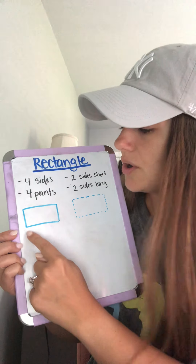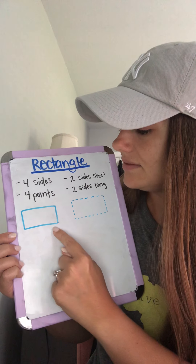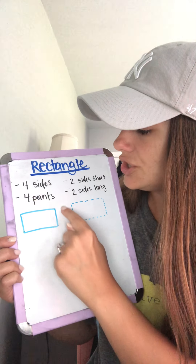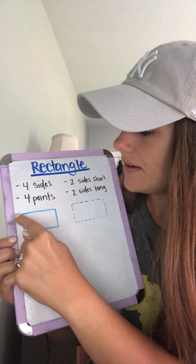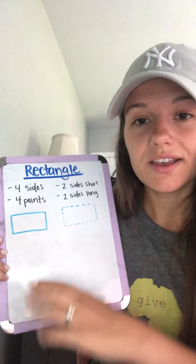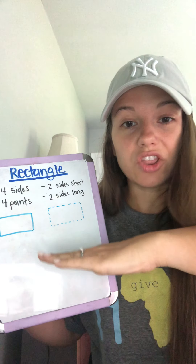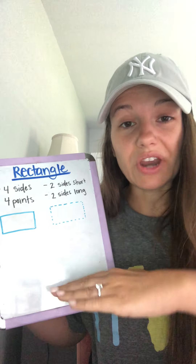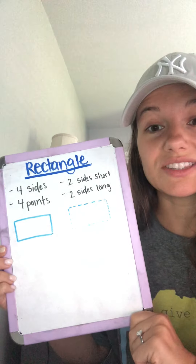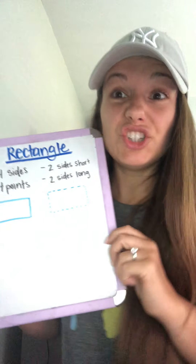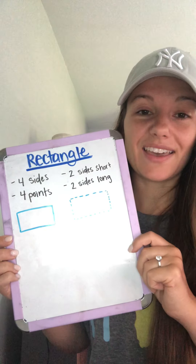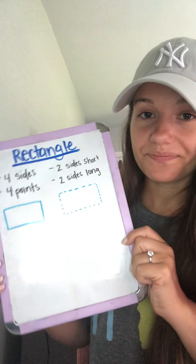Let's count: one, two, three, four. So all those long straight lines, those are sides, and a rectangle has four of them just like a square.